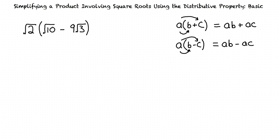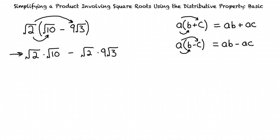We can use the distributive property to remove the parentheses from our expression. So we have the square root of 2 times the square root of 10, minus the square root of 2 times 9 times the square root of 3.